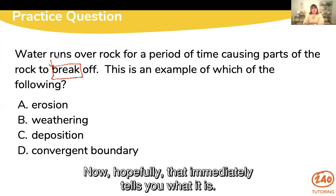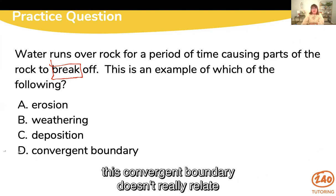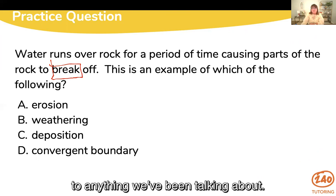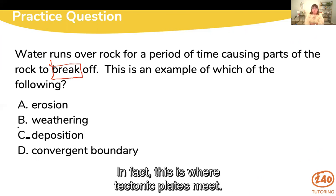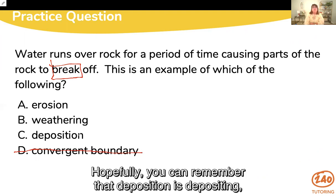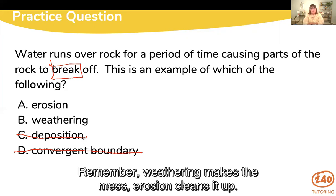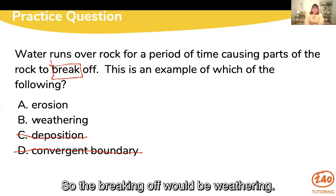Hopefully that immediately tells you what it is. But if we use process of elimination: convergent boundary doesn't relate to anything we've been talking about — that's where tectonic plates meet. Deposition is depositing, since the word deposit is in there. Now you just have to choose between weathering and erosion. Remember, weathering makes the mess and erosion cleans it up — so the breaking off would be weathering.